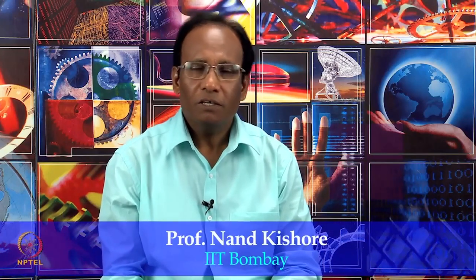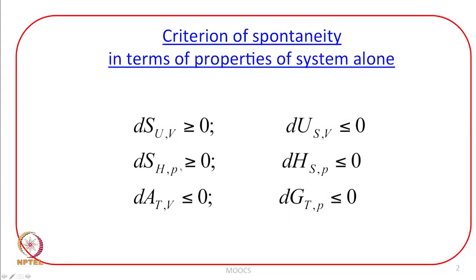We have earlier discussed the criteria of spontaneity in terms of changes in the entropy of the system and entropy of surroundings, and then we discussed the criteria for spontaneity in terms of changes in the properties of the system alone. Along with that, we also discussed that in each case the second law of thermodynamics is obeyed. These are the 6 criteria of spontaneity discussed in terms of properties of the system alone, and each individual criteria obeys the second law of thermodynamics.